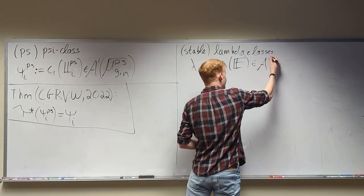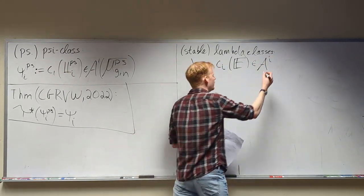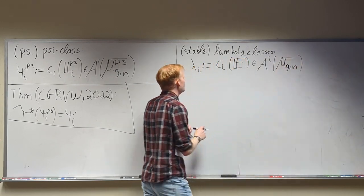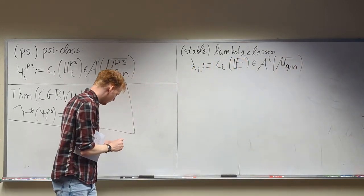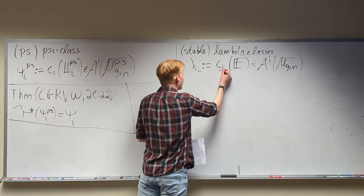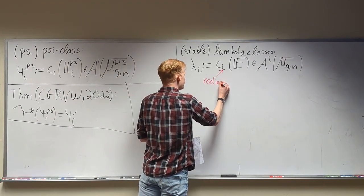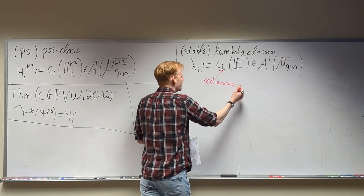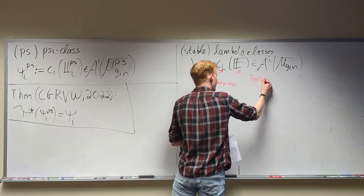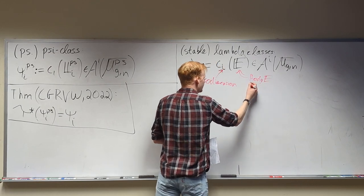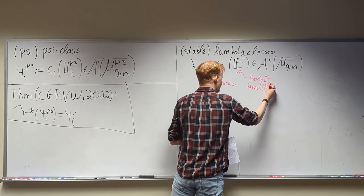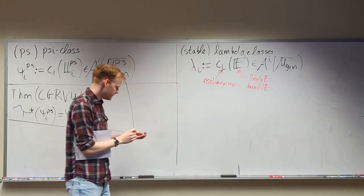The i tells me the codimension, and E is for — I guess — Hodge-E-bundle-y. I don't know why they picked E for this, but it is what it is. Now what is the Hodge bundle? It's another example of a vector bundle, this time usually not a line bundle — a vector bundle over the moduli space of curves.